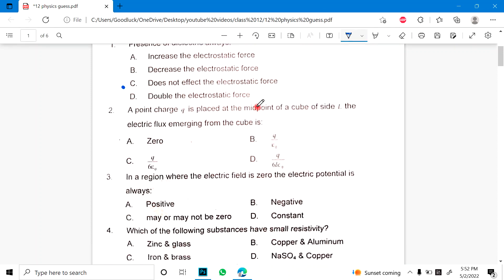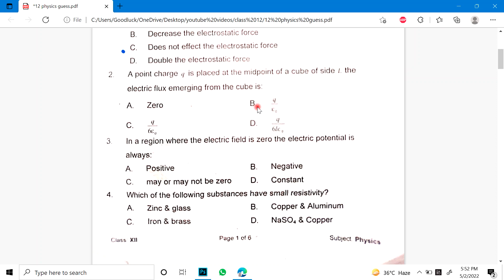Number 2 is: A point charge Q is placed at the midpoint of a cube of side L. The electric flux emerging from the cube is - these properties, applications and gauges they can apply. Number 3: In a region where electric field is zero, the electric potential is always positive, negative, potential constant, may or may not be zero.